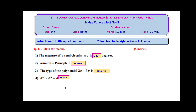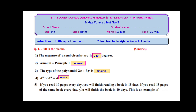The last sub-question, number five: if you read 10 pages every day, you will finish a book in 15 days. If you read 15 pages of the same book every day, you will finish it in 10 days. This is an example of what? When the number of reading pages increases, fewer days are required. Therefore, this is an example of inverse variation.